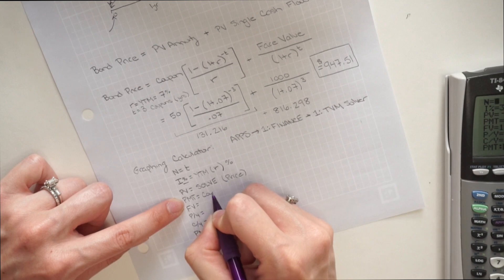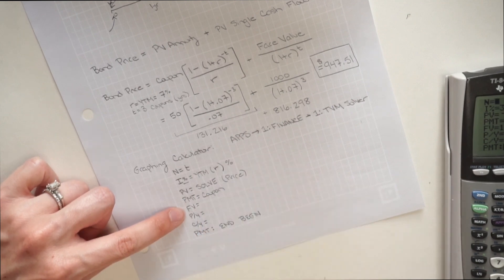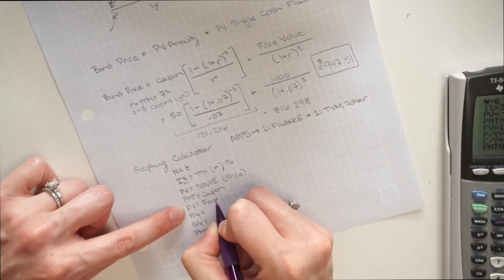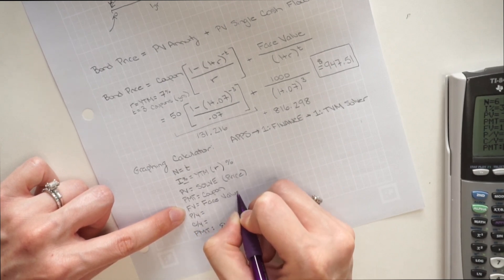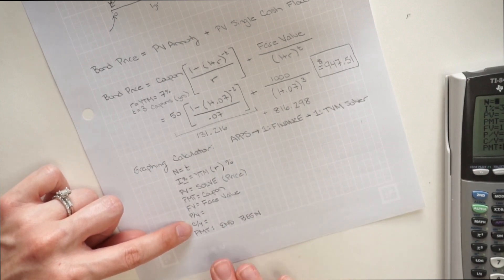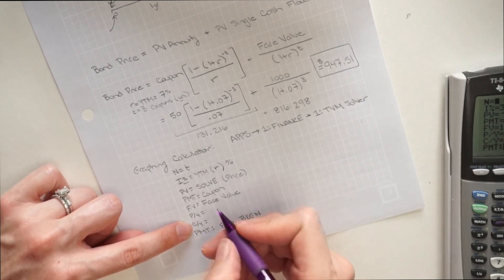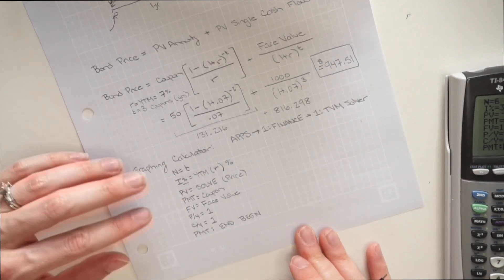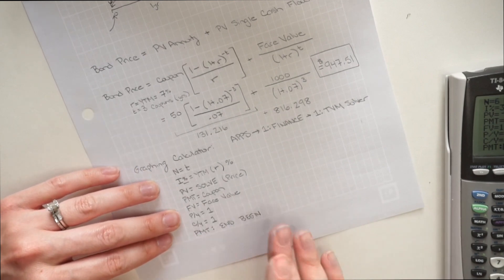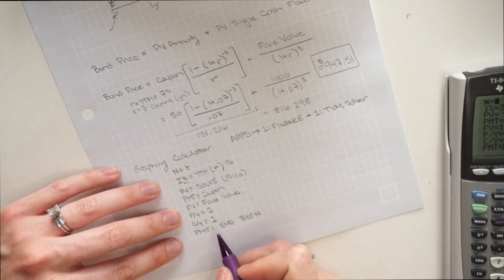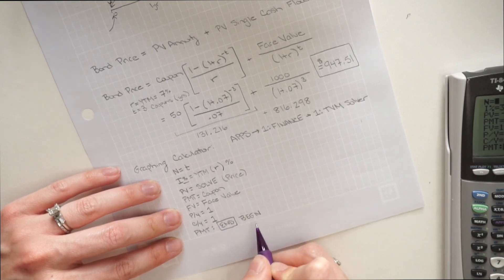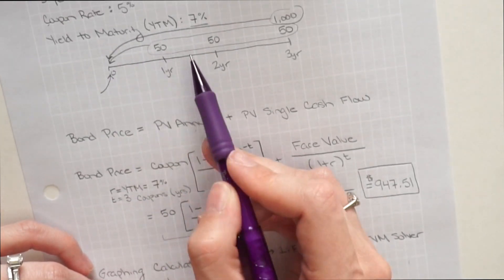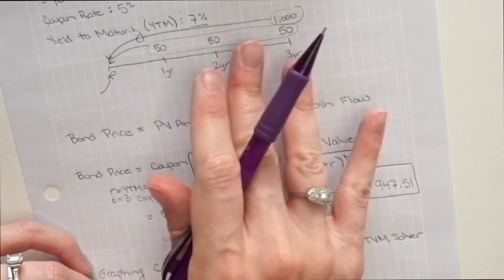Payment, that's going to be our coupon. FV, that stands for future value. So in this case, that's going to be our face value. Payments per year and compounds per year, I never change on my calculator. So I always leave those as one and one. What I change instead are the inputs up above. For this case though, everything's annual, so you don't have to worry about it. And then the last thing you want to check is that end is highlighted, not begin. So end means that each one of these cash flows happens at the end of each period, which is exactly what we have here.